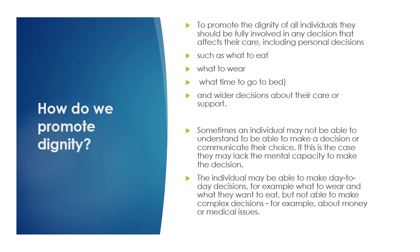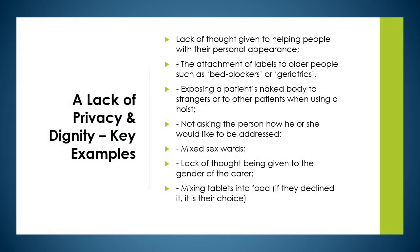Sometimes an individual may not be able to understand or communicate their choice and may lack the mental capacity to make certain decisions. They may be able to make day-to-day decisions such as what to wear and what to eat, but not be able to make complex decisions about money or medical issues. Examples of a lack of privacy and dignity include: lack of thought in helping people with personal appearance, attaching labels like 'bed blockers' or 'geriatrics' to older people, exposing a patient's body to strangers, not asking how someone wishes to be addressed, mixed sex wards, and mixing tablets into food without consent.